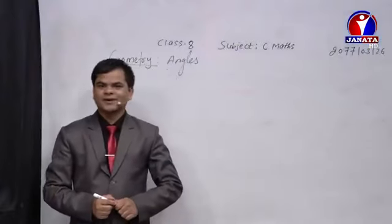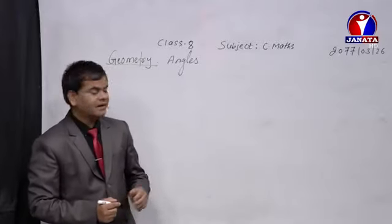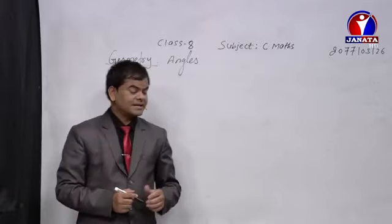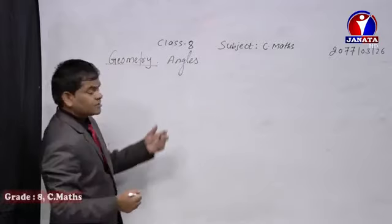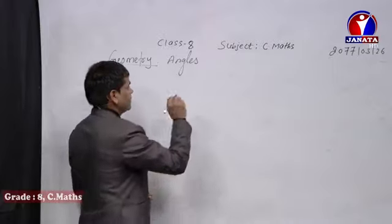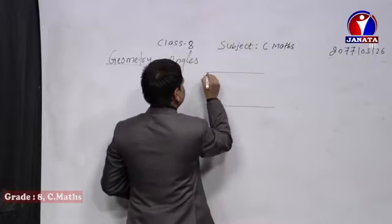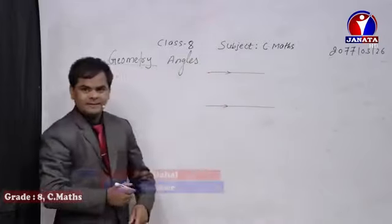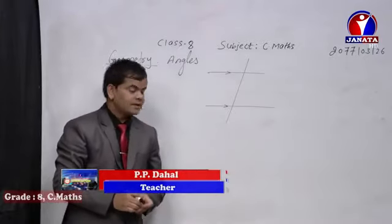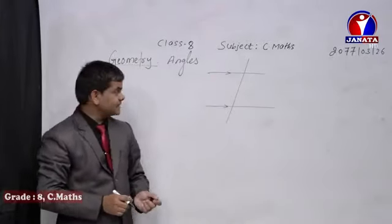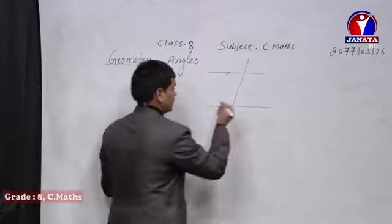Hello everyone, good morning to you all. Today we are discussing the same chapter: angles. We were discussing the angles represented between two parallel lines, so I want to focus once again on the same topic. Let's take again one example. These two lines are being parallel to each other. If a transversal is presented to intersect the two parallel lines, at that time several types of angles are formed.